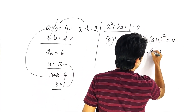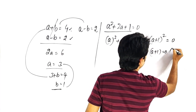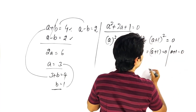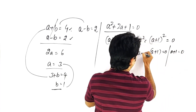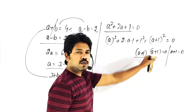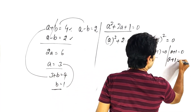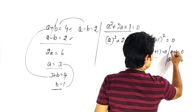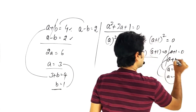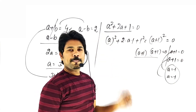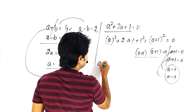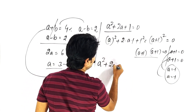If we equate this with 0, then a plus 1 equals 0 and a plus 1 equals 0. We can write this as a plus 1 into a plus 1 equals 0, which is a plus 1 whole square equals 0.